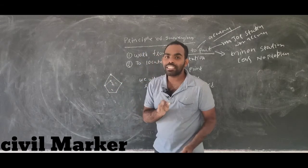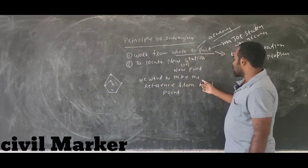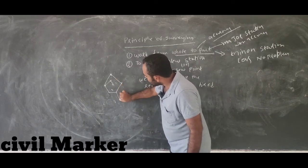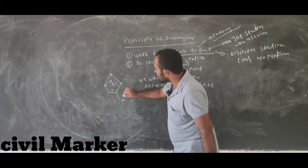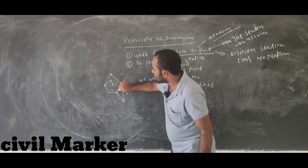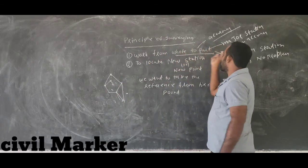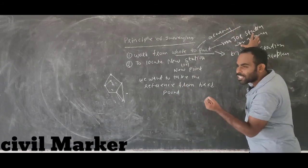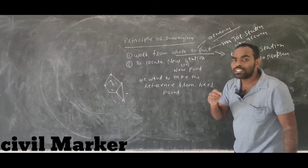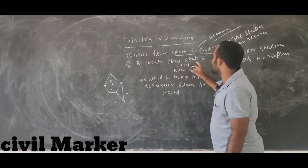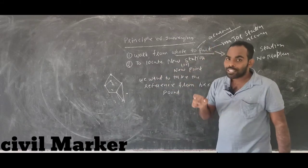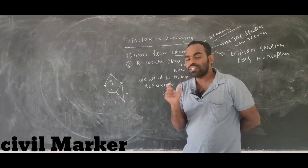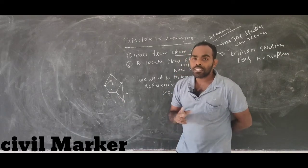The distance is a fixed point. We have to identify the distance, look at fixed points, and take two fixed points and data. Work from whole to part — accuracy is a fixed point. We have to look at new stations with reference from fixed points. These are the two principles of surveying.